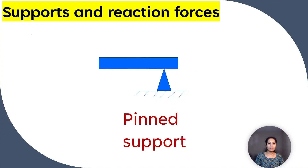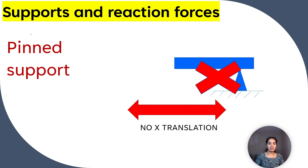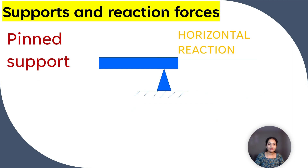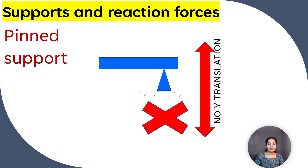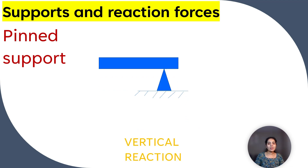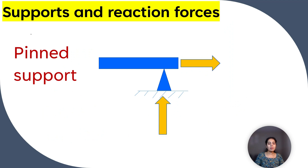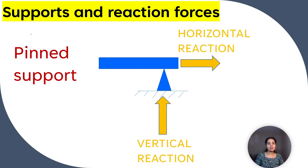A pin support allows the member to rotate. It does not allow translation in the x direction — therefore the reaction force is a horizontal force acting away from the support. It does not allow translation in the y direction — therefore the reaction force is a vertical force acting away from the support. In summary, a pin support can resist both horizontal and vertical forces but not rotation, so the reaction forces are horizontal and vertical forces acting away from the support.